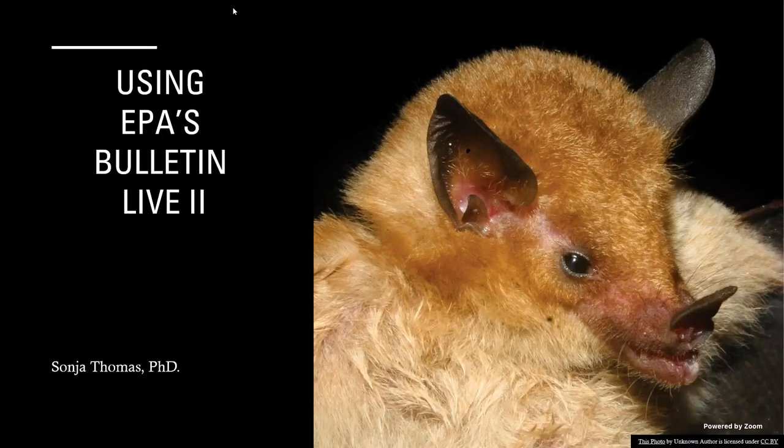So you still may see a reference to it on your label, but where you're going to find the most updated information is on Bulletin Live 2. Alabama has a lot of different endangered species, one being the hognose bat. We're just going to talk about this Bulletin Live 2 today.